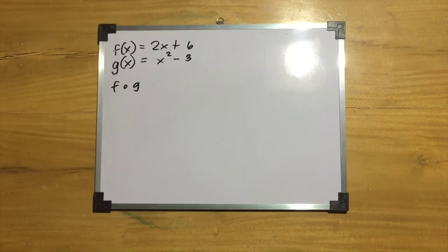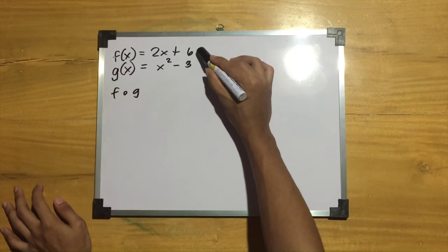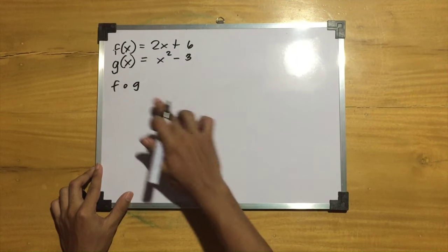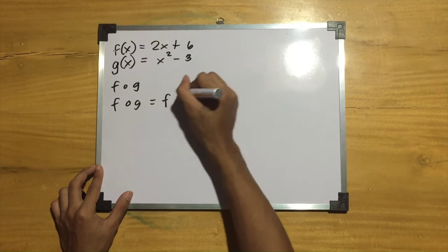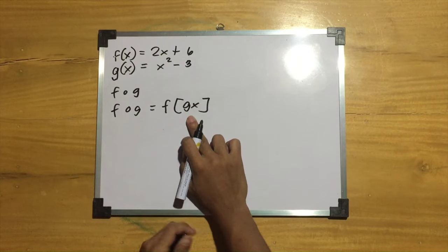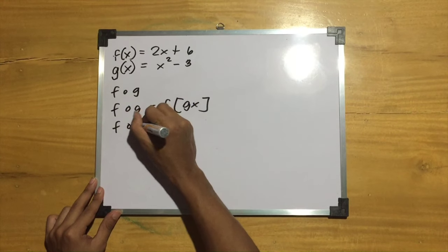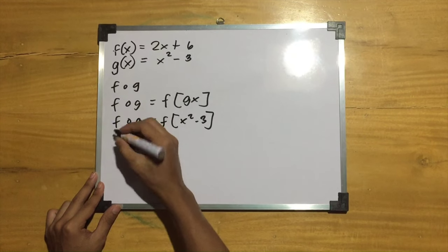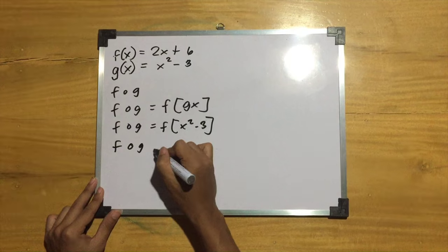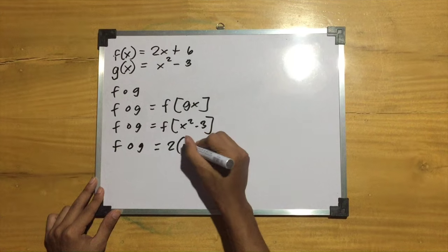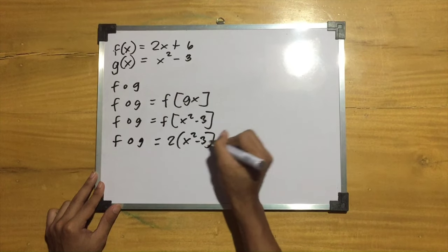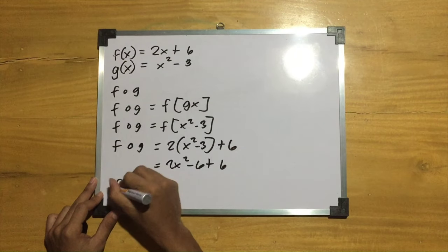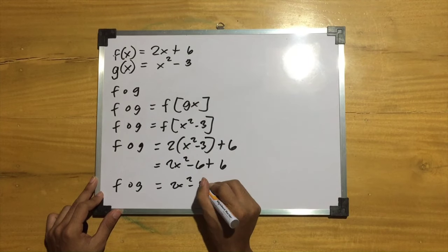Now let's solve for composite functions with f of x equals 2x plus 6 and g of x equals x squared minus 3. Suppose we find f of g. In this case, g of x is inside f of x, so f of g equals f(g(x)). Substituting, f of g equals f(x squared minus 3). Then substituting into f of x: f of g equals 2(x squared minus 3) plus 6, which equals 2x squared minus 6 plus 6, giving the final answer 2x squared.